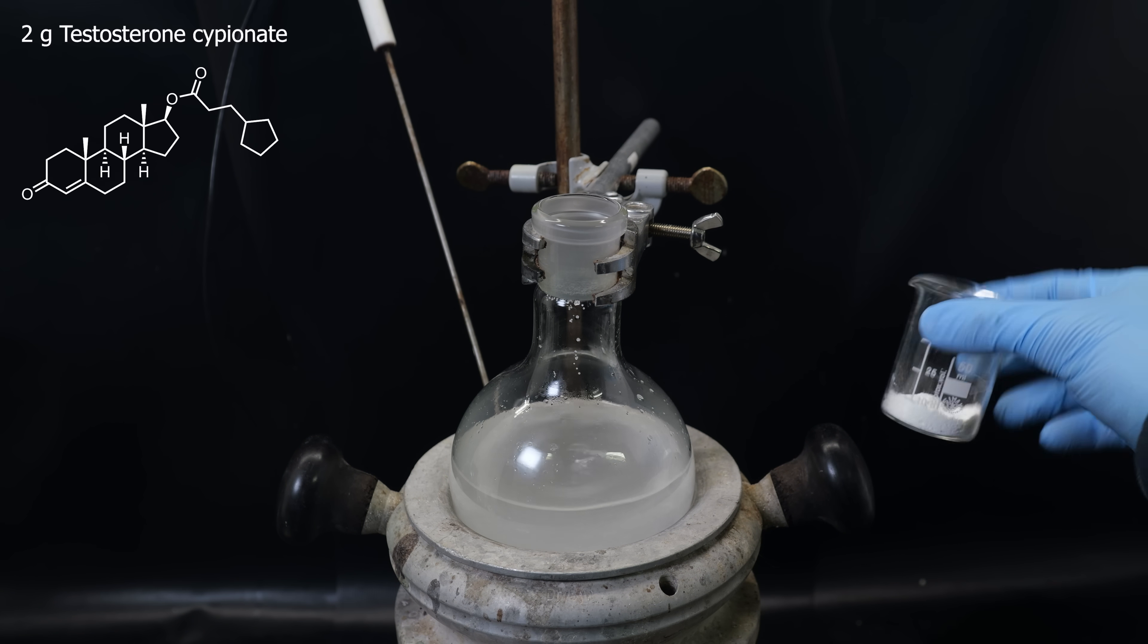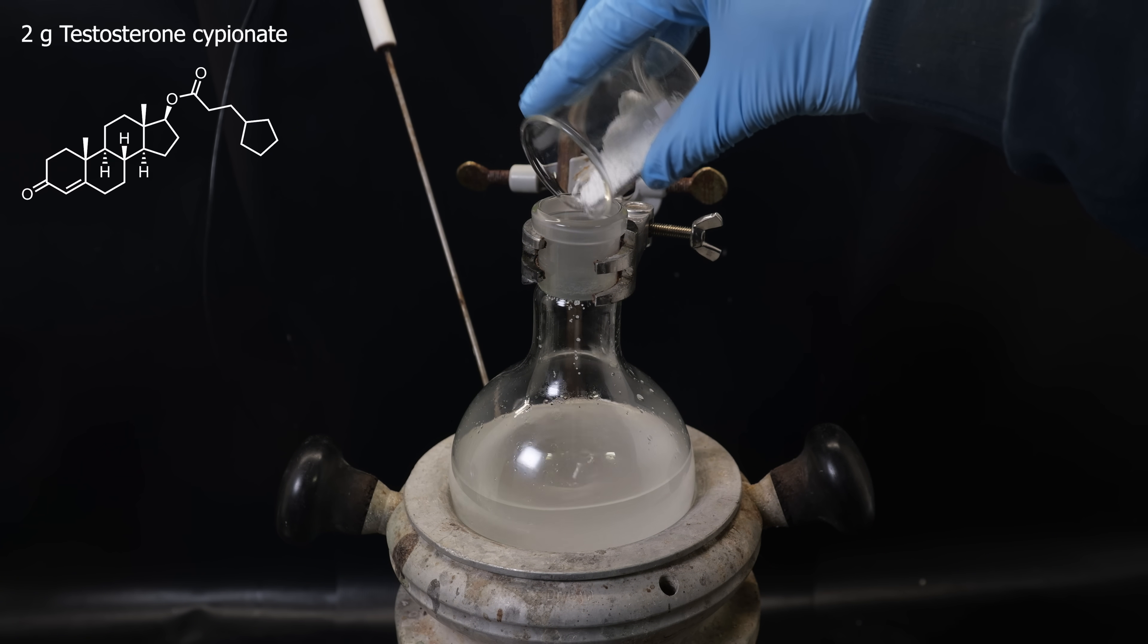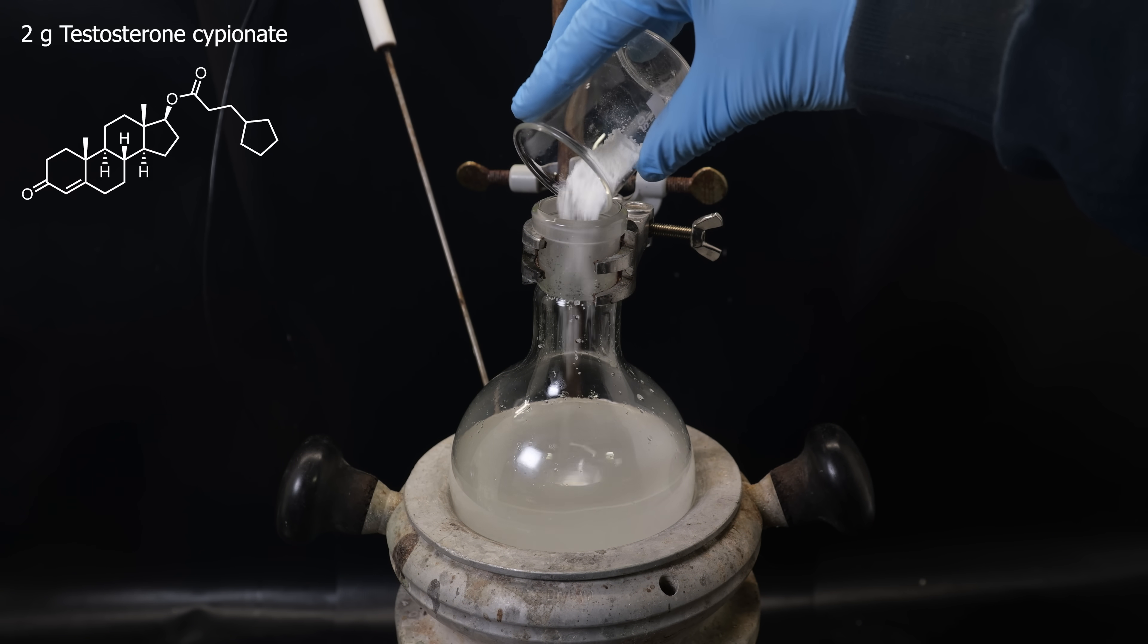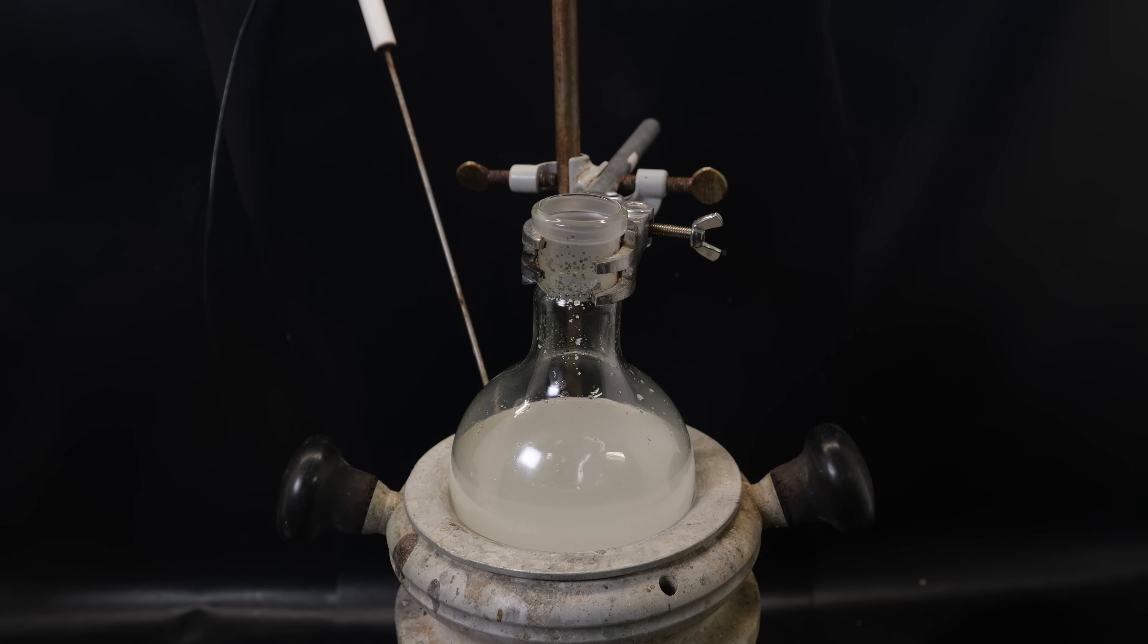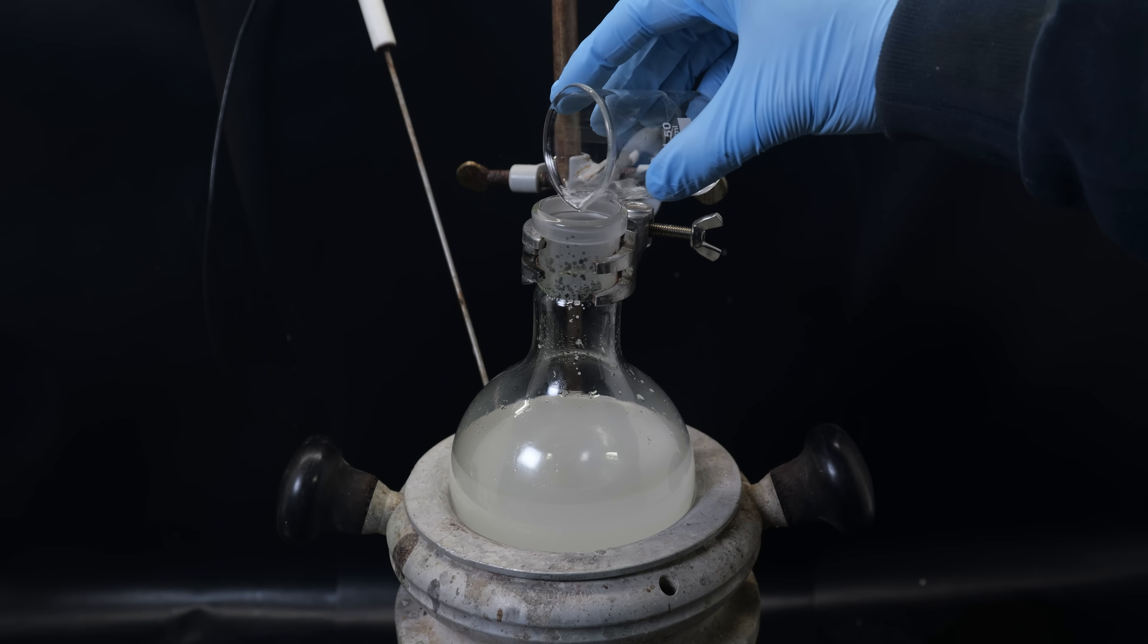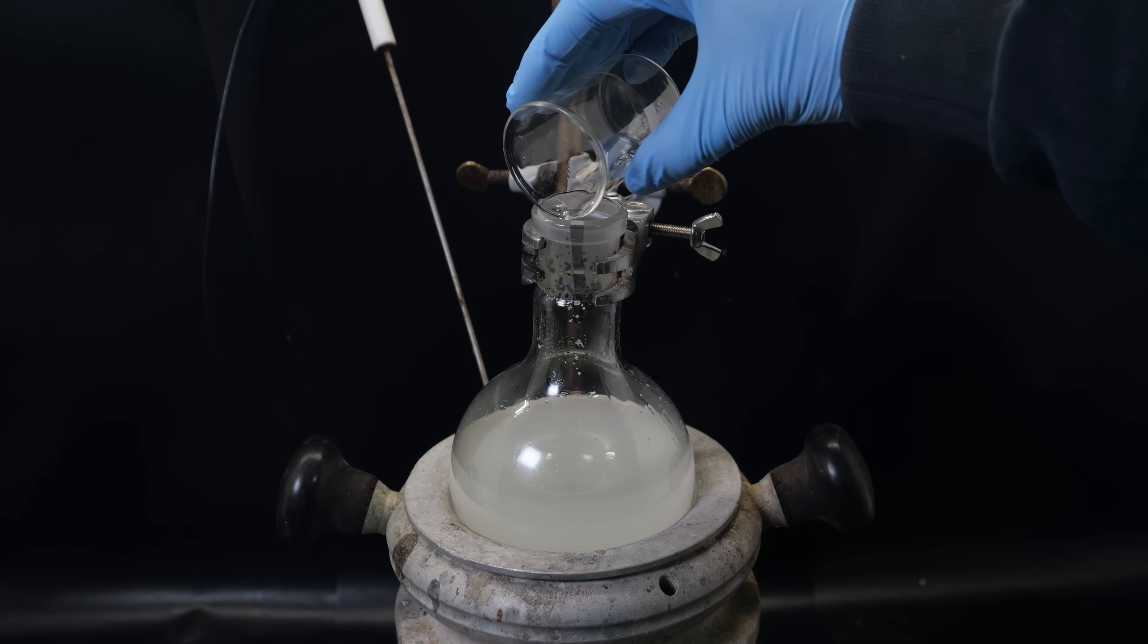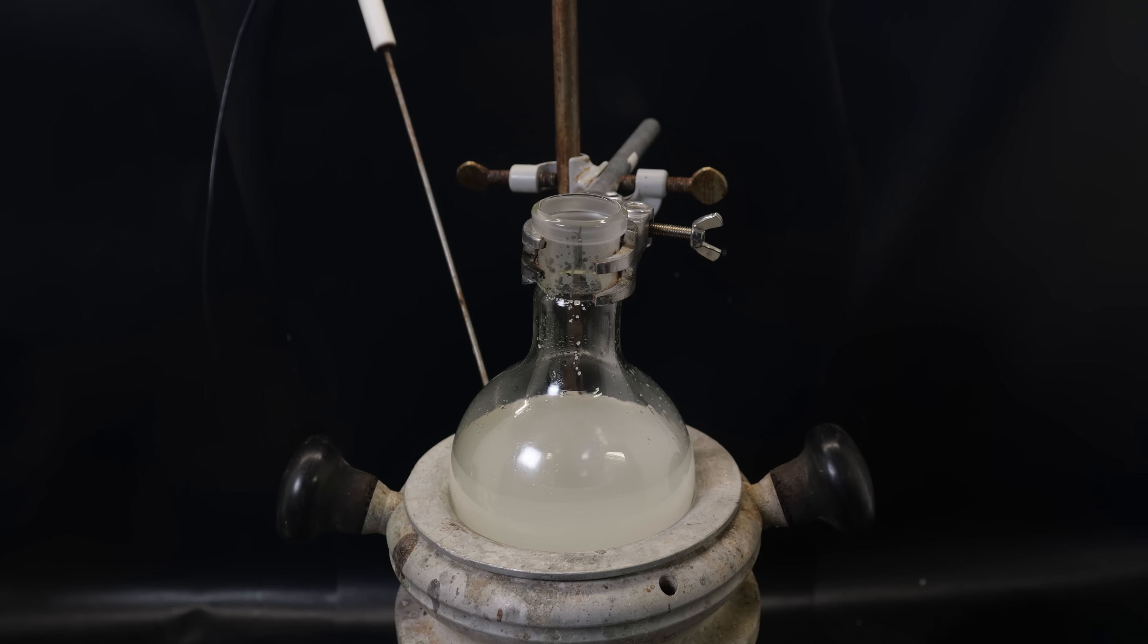And finally, as a starting material, 2 grams of testosterone cipionate, which is just a white powder, and will dissolve into the dichloromethane. I wash out the beaker with a bit more dichloromethane, and then allow this mixture to stir strongly at 30°C overnight.